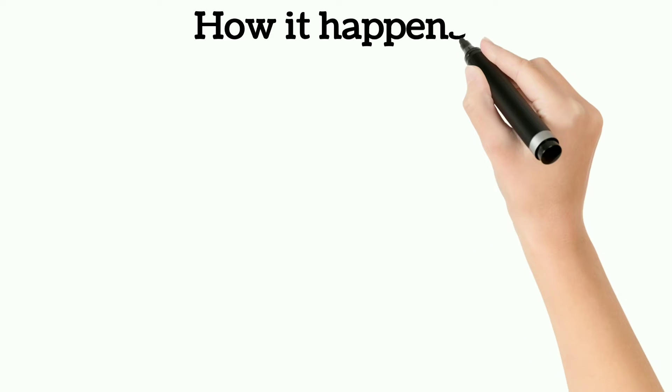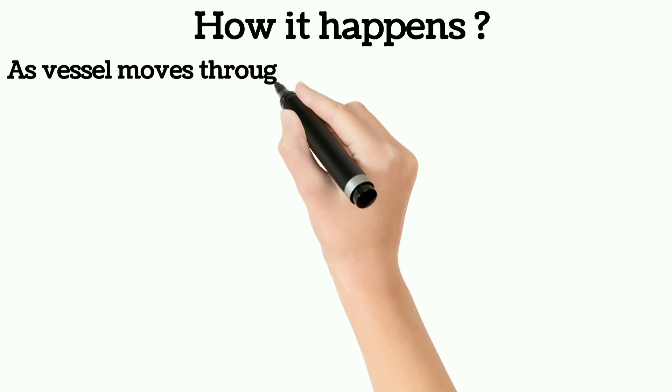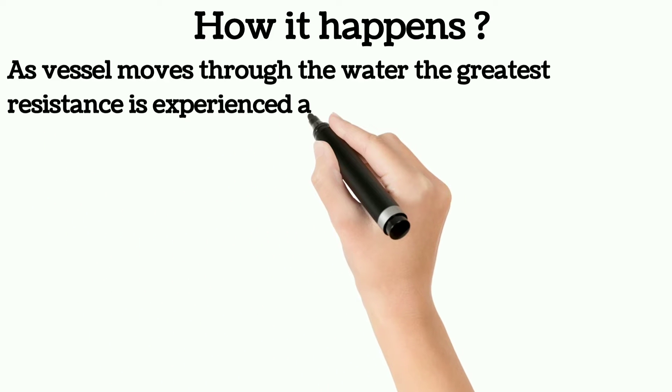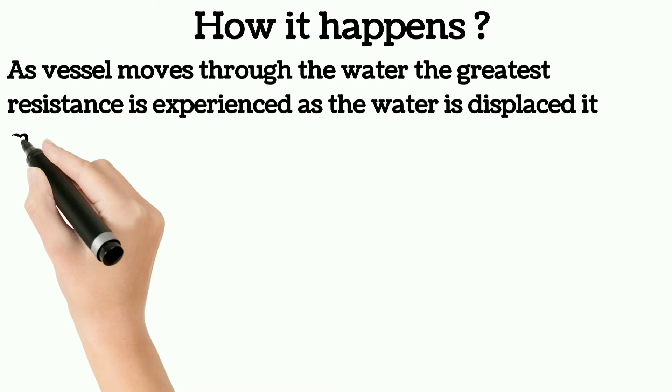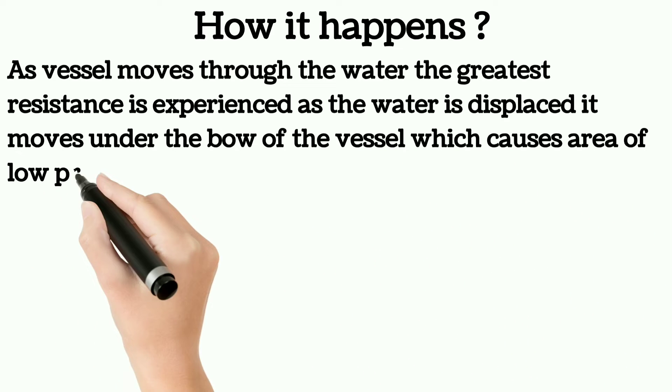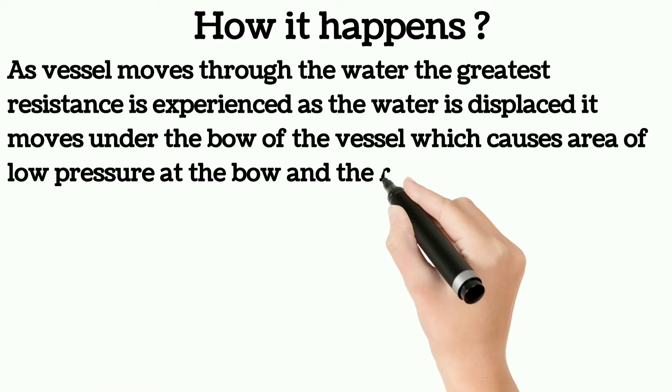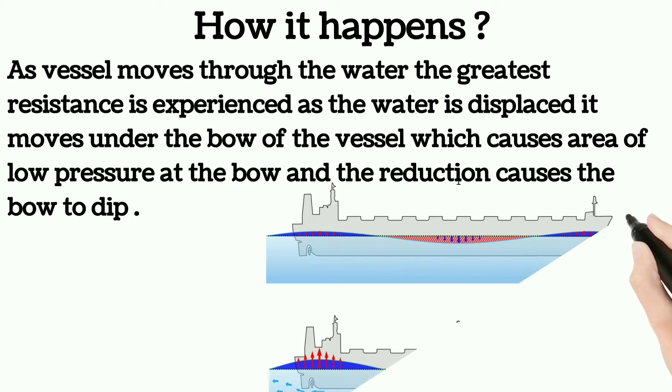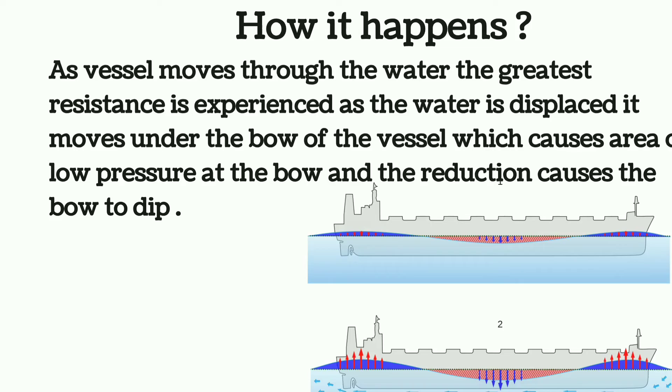Now we will see how it happens. As the vessel moves through the water, the greatest resistance is experienced at the bow. As the water is displaced, it moves under the bow of the vessel which causes an area of low pressure at the bow. Due to this pressure reduction, the bow deepens and this is known as squat.